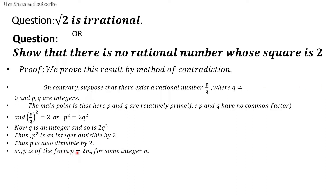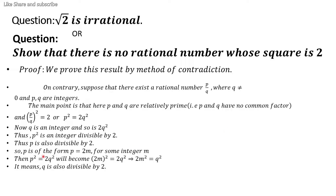So p is of the form p = 2m. Putting p = 2m into the equation gives (2m)² = q², which means q² = 4m², so q² is divisible by 2, meaning q is also divisible by 2. But we assumed p and q have no common factor — yet both are divisible by 2, so 2 is a common factor. This is the contradiction.